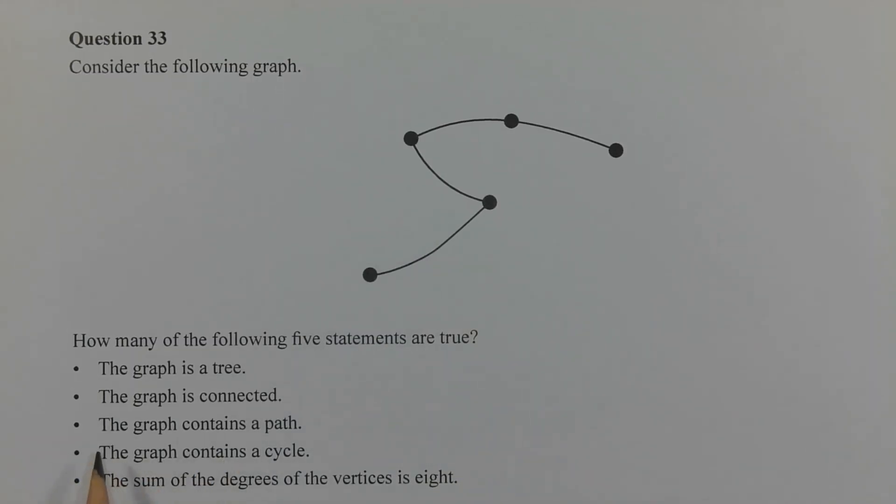Let's consider the third statement. The graph contains a path. Now a path is a walk where there are no repeated edges or vertices, and in this case what we have here is a path. So the third statement is correct.